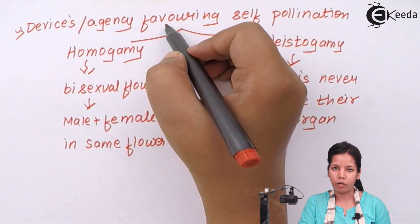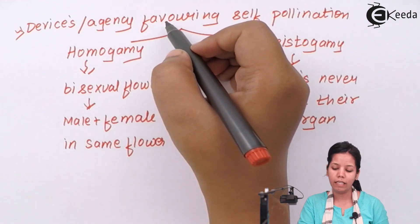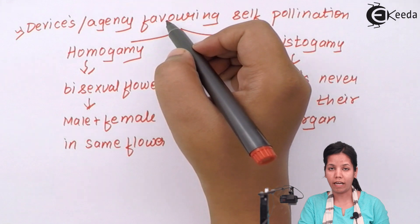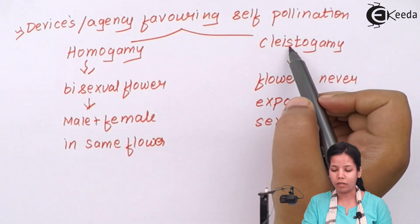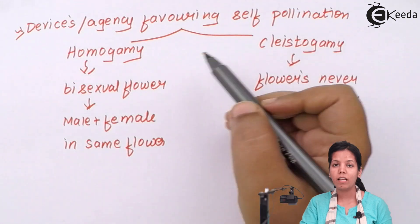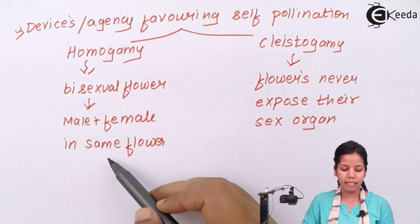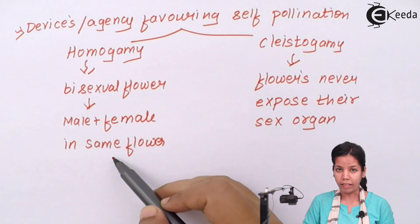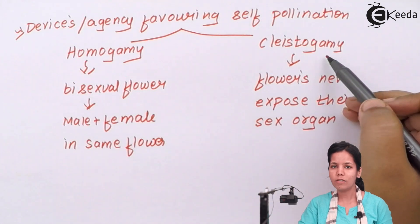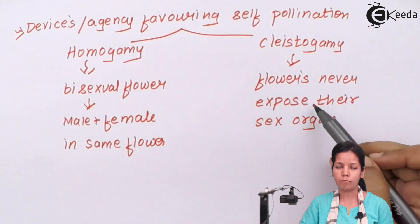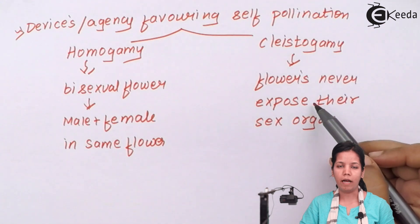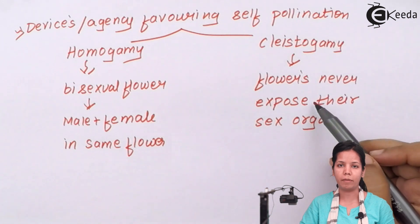To help the self-pollination process run smoothly, there are two agencies or factors: homogamy and cleistogamy. Homogamy means bisexual flowers, which have both the male and female gametes in the same flower. In cleistogamy, the flowers never expose their sex organs, and the pollen grains directly fall on the stigma and reach the egg near the ovary, where fertilization takes place.